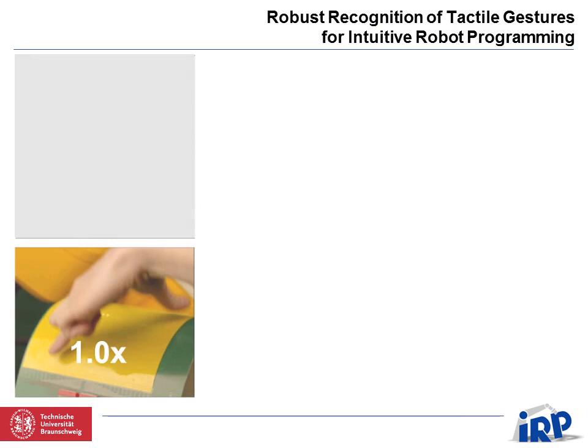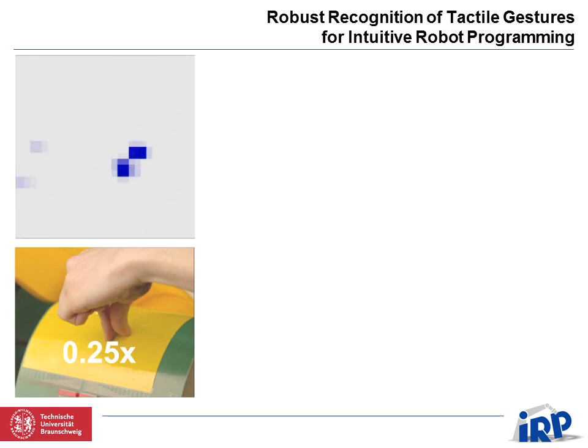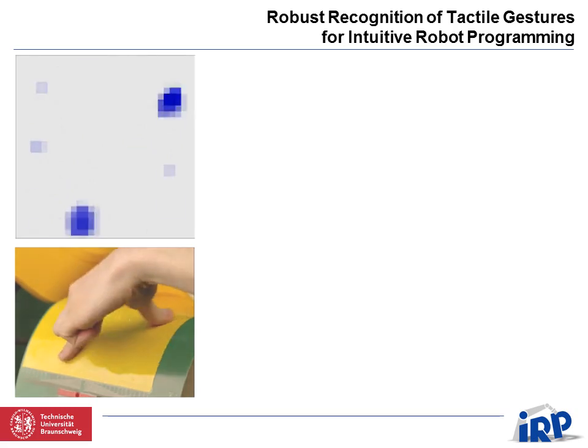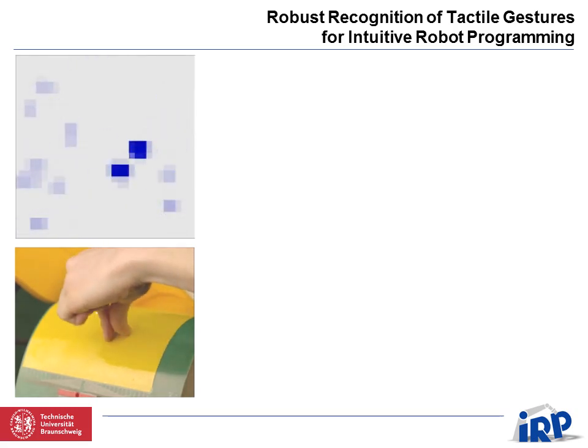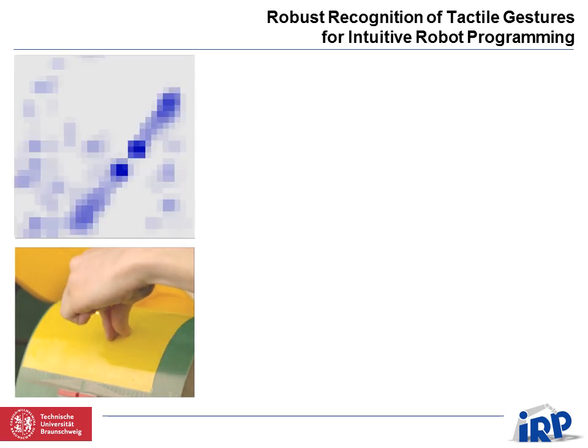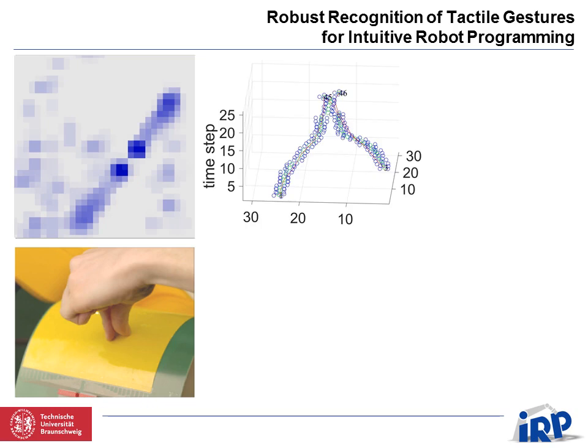The raw data measured by the tactile surface sensor are shown in the top video frame and the gesture execution in the bottom frame. After preprocessing the sensor data, a graph representing the evolution of contact points on the sensor is computed.